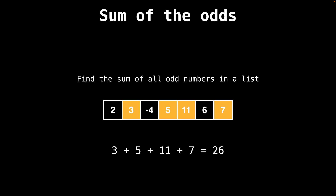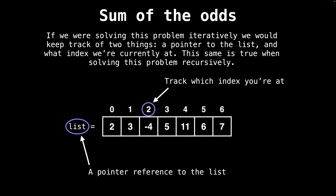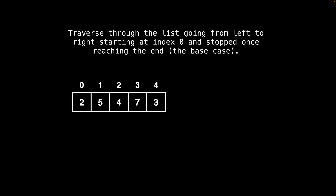For the list shown, the sum of all the odd numbers would be three plus five plus 11 plus seven, for a total of 26. If you were to think of how you would solve this problem iteratively, you would be keeping track of two things: a reference to the list and the index position that you're at. The same is true when solving the problem recursively — we maintain a reference to both the list and the index at all times. We'll loop through the list from left to right, starting at index position zero and stopping once we reach the end.